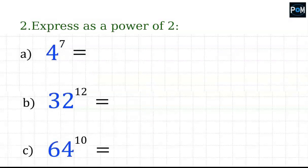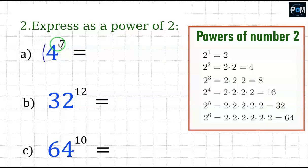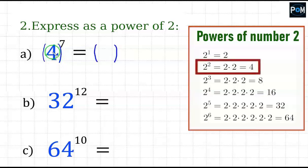Second task: express as a power of 2. This task will be a bit more difficult, because here I have 4 and I would like to write the result in the form of a power of 2 — that is, 2 to some power. A table of powers of 2 will be useful here. For example, 2 to the power of 2 equals 4, and 2 to the power of 3 equals 8, and so on. The number 4 can be replaced using our table: 4 is the same as 2 to the power of 2, so instead of 4, I can write 2 to the power of 2 in parentheses.